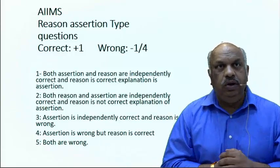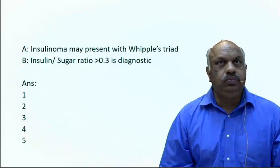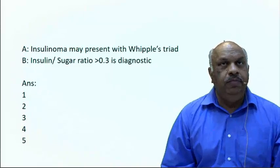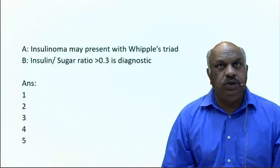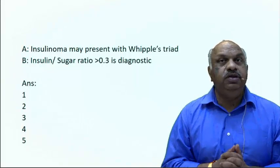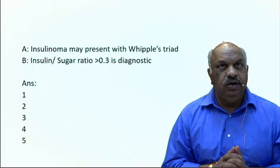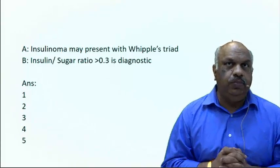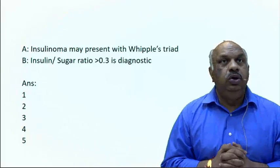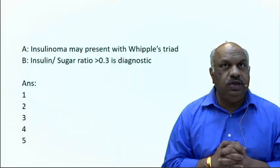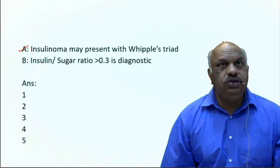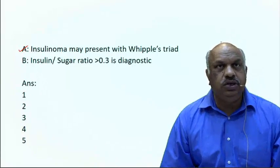The question is: Assertion — insulinoma may present with Whipple's triad; Reason — insulin-to-sugar ratio more than 0.3 is diagnostic. Insulinoma presenting with Whipple's triad is correct. Insulin-to-sugar ratio more than 0.3 is also correct as a value, but it is not diagnostic on its own, and it does not explain the assertion. So only A is correct here.